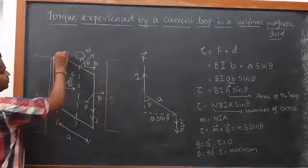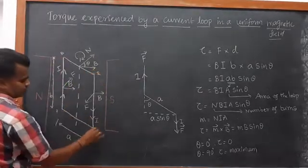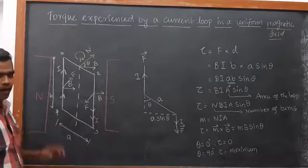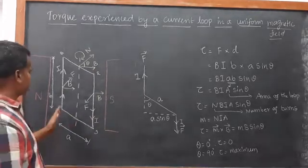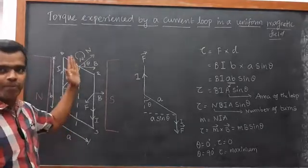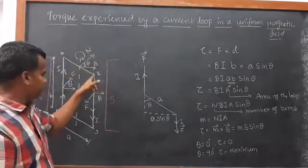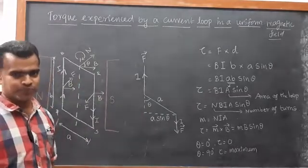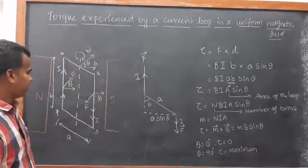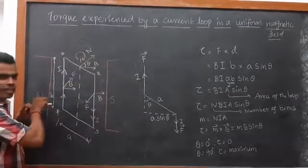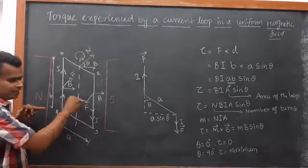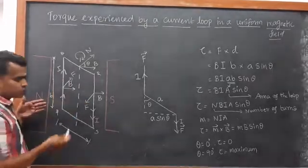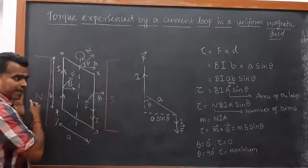I have named the coil as P, Q, R, S. In PQ the current goes in the upward direction, and in RS the current goes in the downward direction. The magnetic field lines are passing through this area.